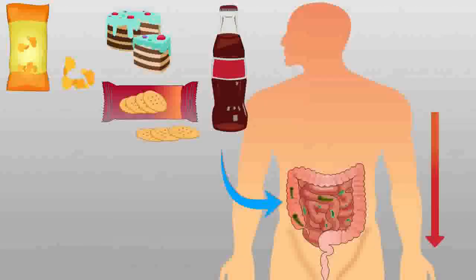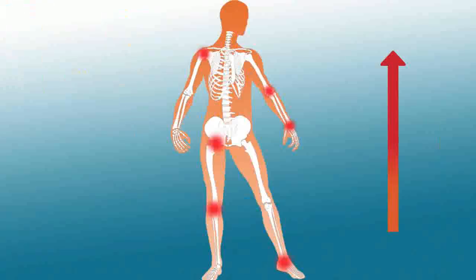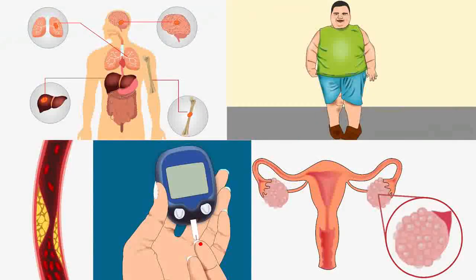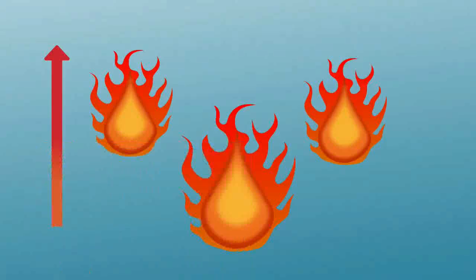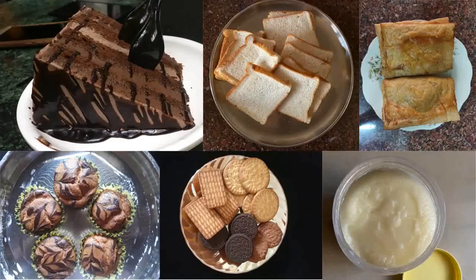Junk food also reduces the good bacteria in the gut, which increases inflammation and the risk of various diseases. Some junk food are high in refined fats like trans fat. Cakes, biscuits, baked products, margarines and vanaspati all have trans fat.